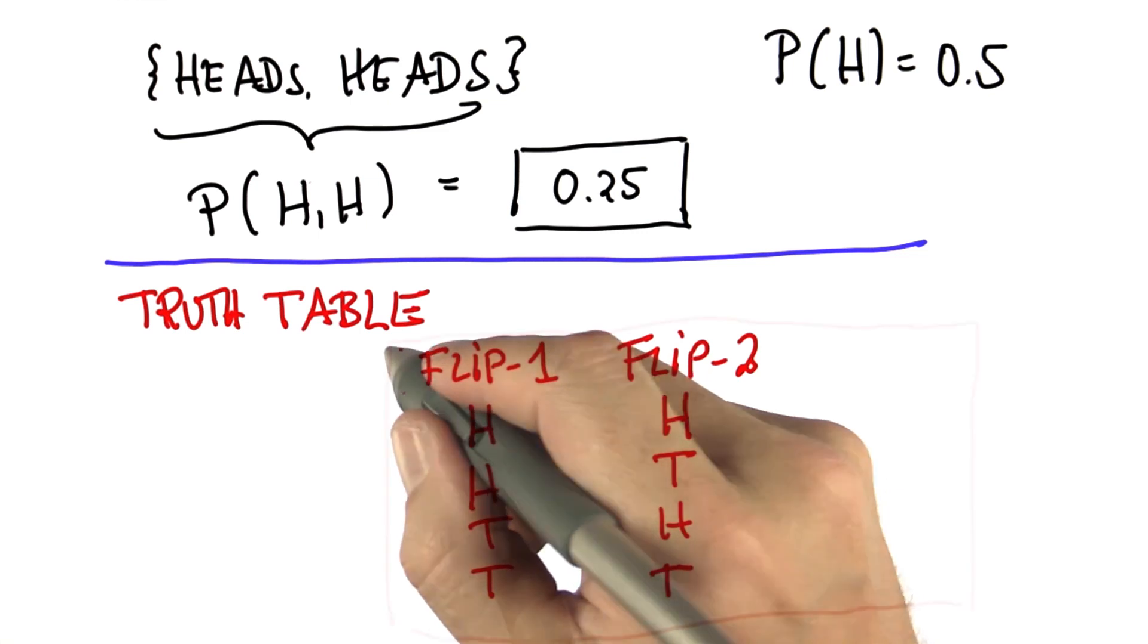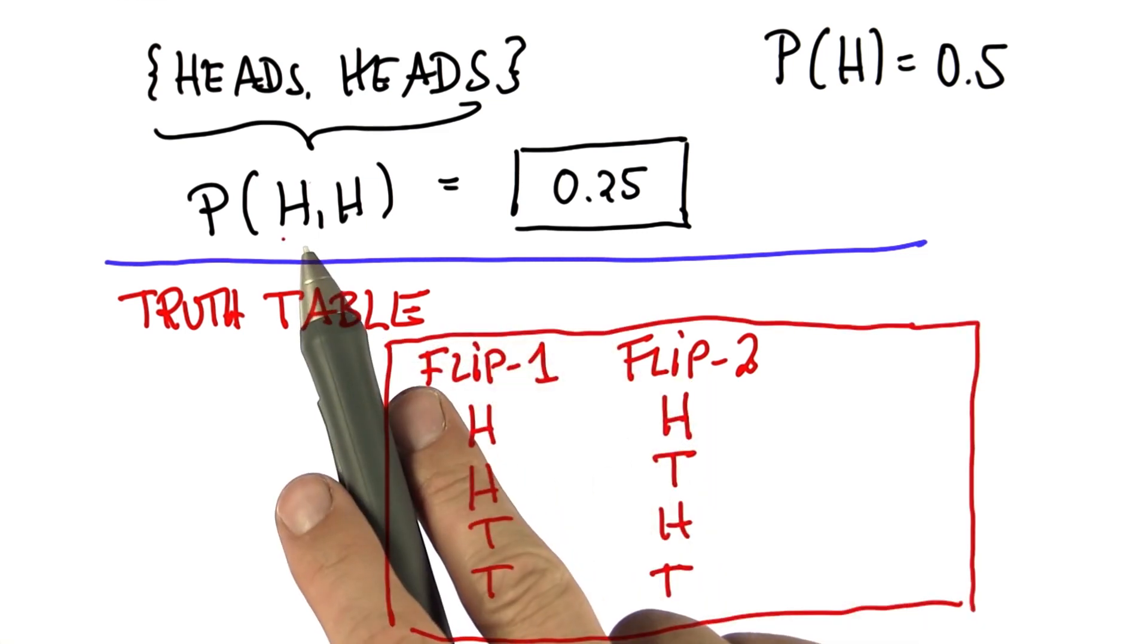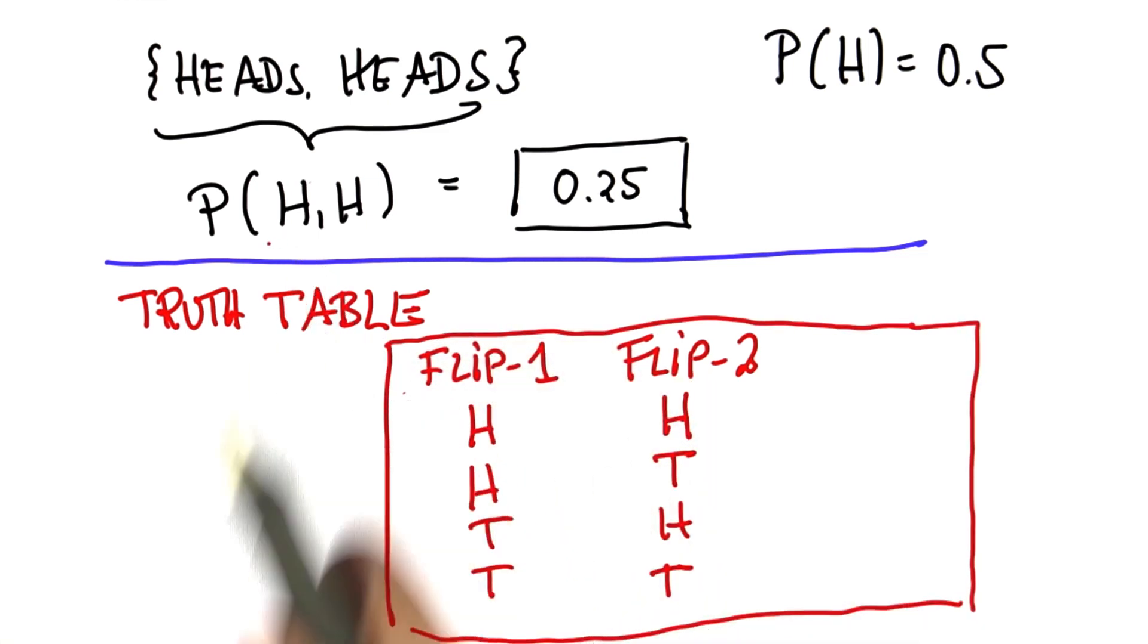So if we look at this table, you can see every possible outcome of these two coin flips. There happens to be four of them. And I would argue, because heads and tails are equally likely, each of these outcomes is equally likely.